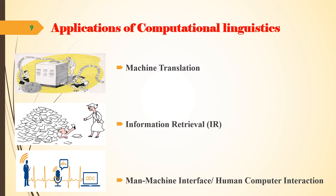An example of machine translation is Google Translate. The second application is information retrieval, which is a program designed to search for relevant information that might be in various kinds of documents. The searching may be query-based or semantic-based. Finally, man-machine interface enables the user to communicate with the computer or any other electronic device through English, Tamil, Malayalam, or any other human language.